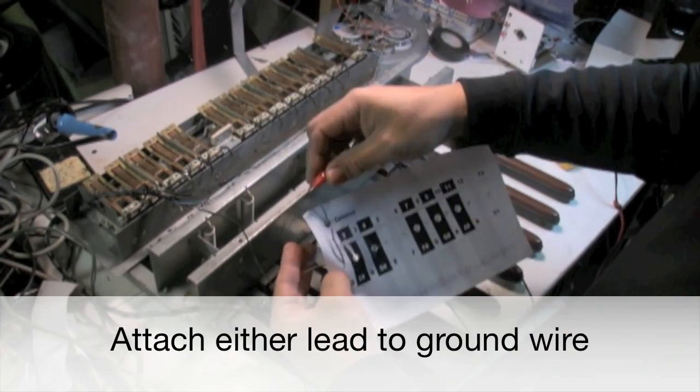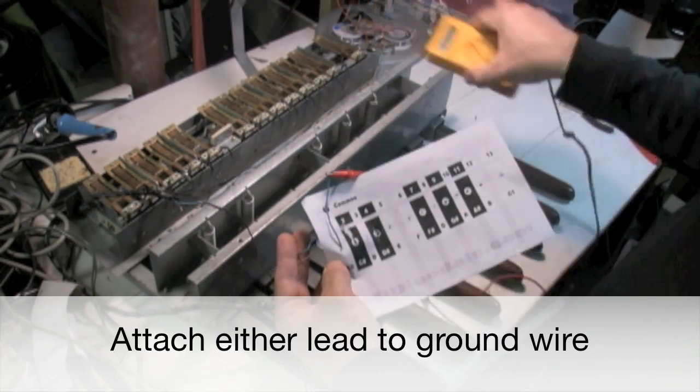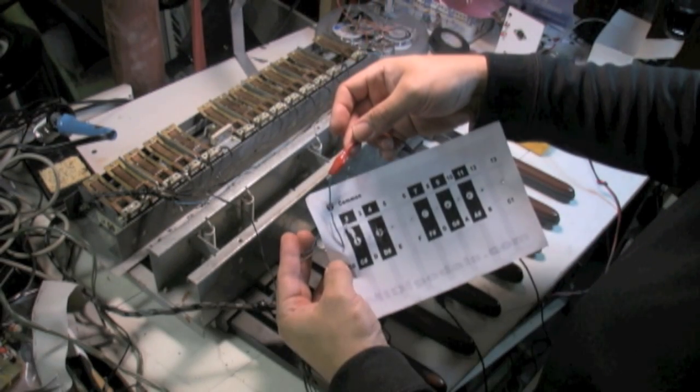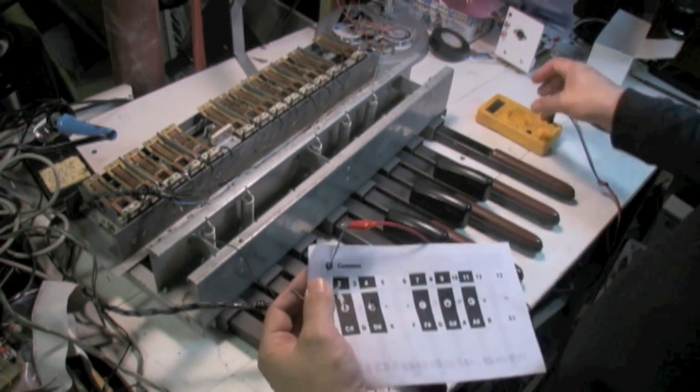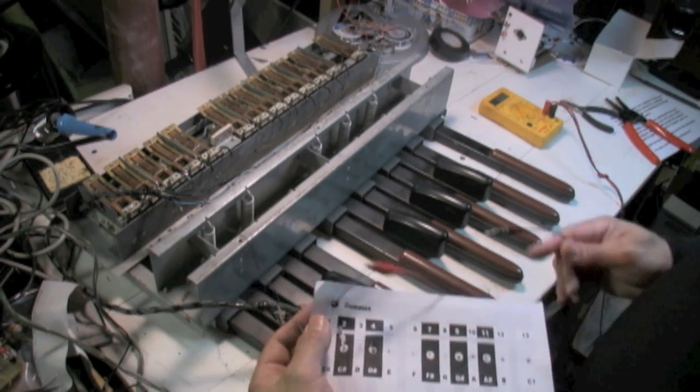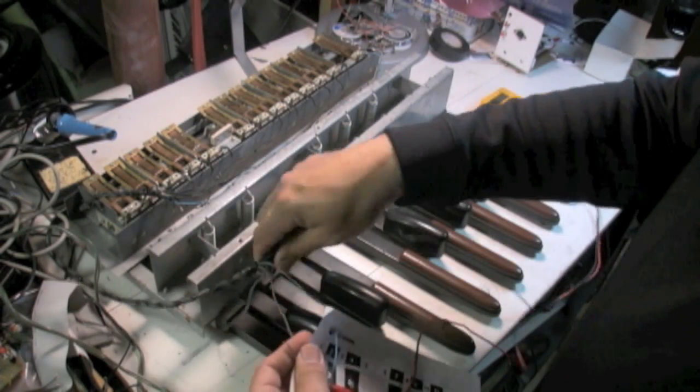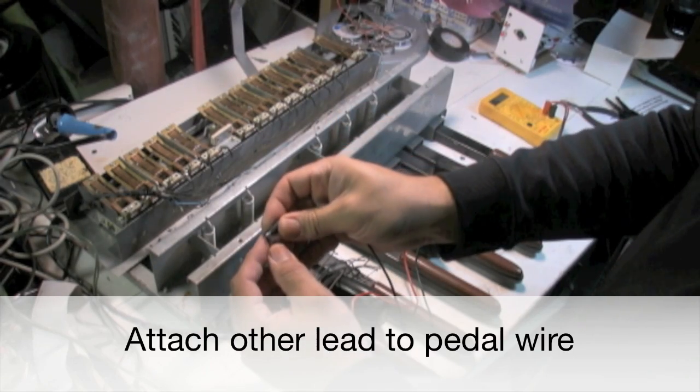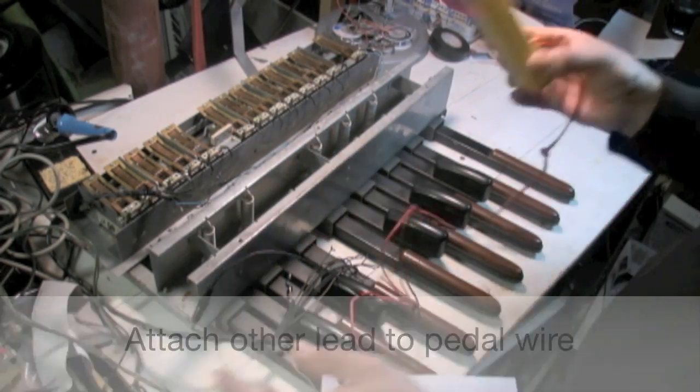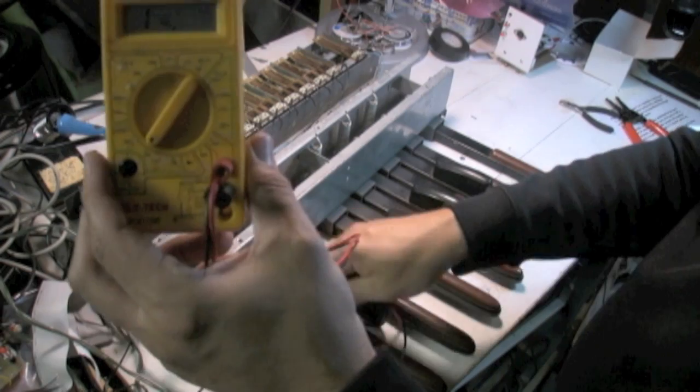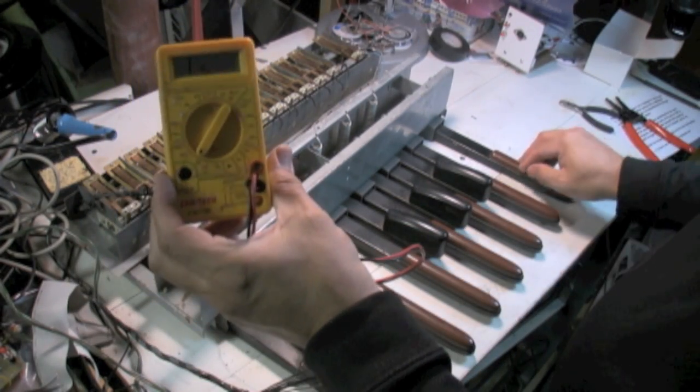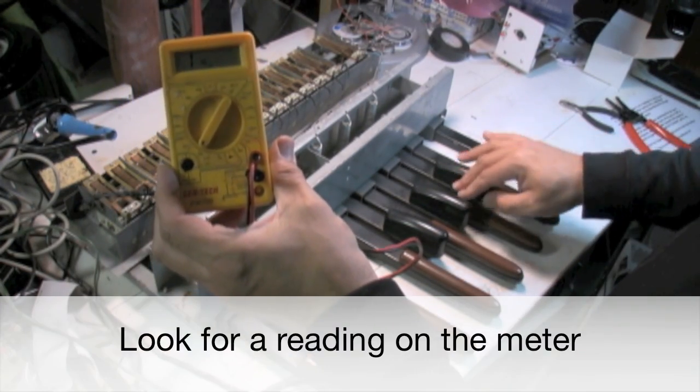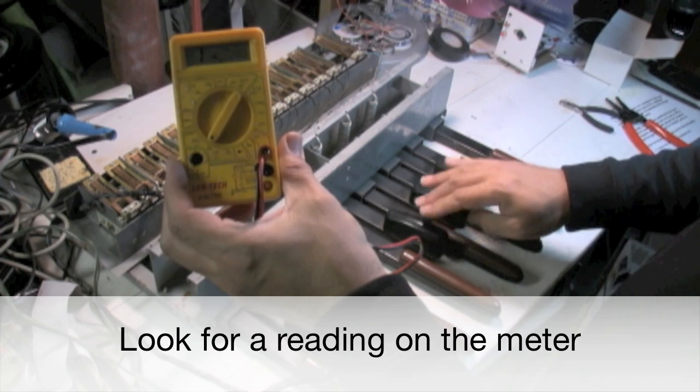Start by attaching either lead to the ground wire. Attach the other lead to the pedal wire, and look for a reading on the meter while you press the pedals.